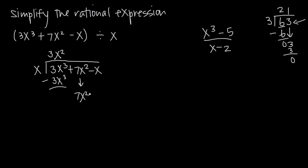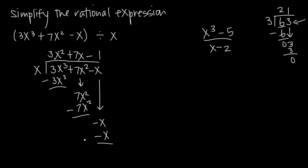How many times does x go into 7x squared, or what do we multiply by x to get 7x squared? That's just 7x. We take 7x, multiply it by x, and get 7x squared. We subtract and get 0. We bring down negative x, so we have negative x. What do we multiply by x to get negative x? That's just negative 1. Negative 1 times x is negative x. Subtracting a negative is the same as adding, so negative x plus x is 0. Our remainder is 0, and the quotient is 3x squared plus 7x minus 1.